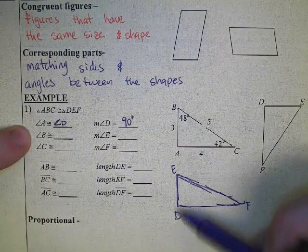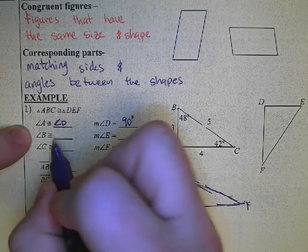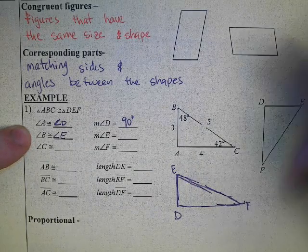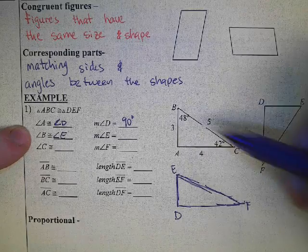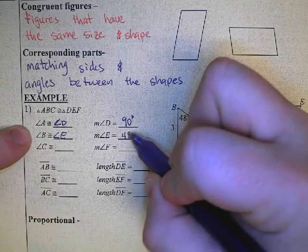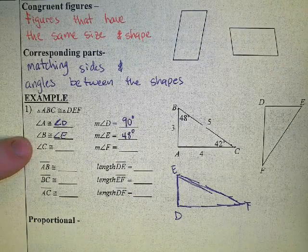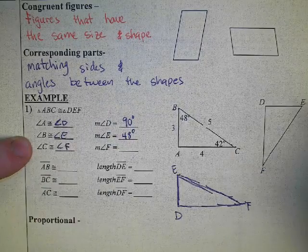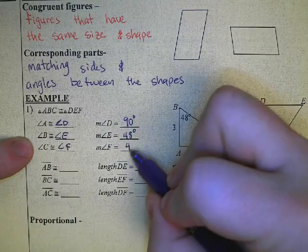Angle B corresponds to angle E, so they are congruent. And the measure of angle E will be the same as angle B, so just 48 degrees. And angle C corresponds to angle F, so the measure of angle F will be 42 degrees.